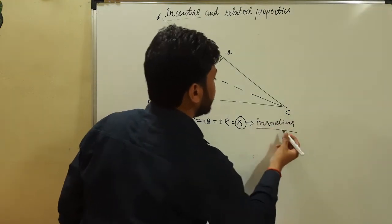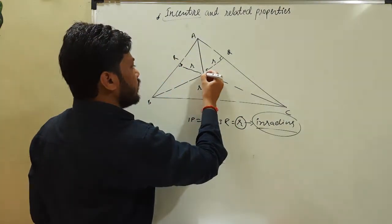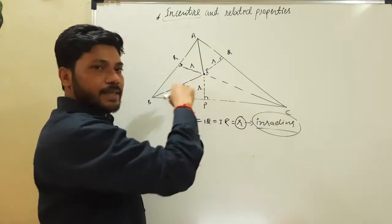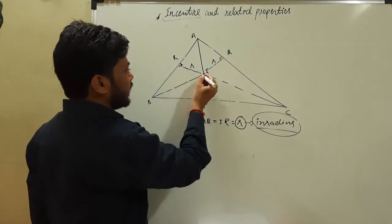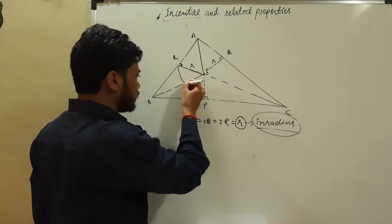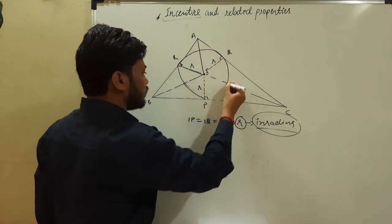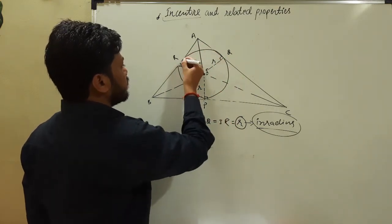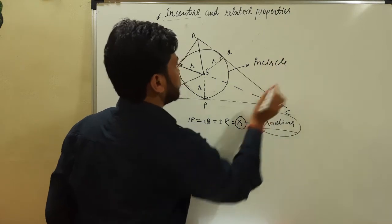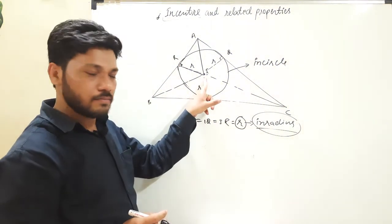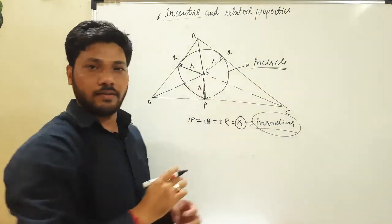This small r is the inradius. The inradius is the radius of the incircle. If we take the incenter as the center and draw a circle with radius r, this circle is called the incircle. Remember: there are three related terms — incenter, incircle, and inradius.